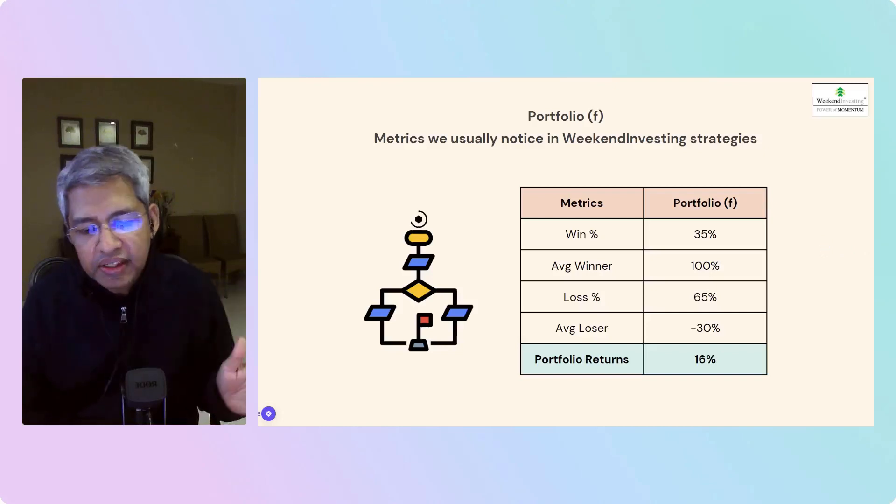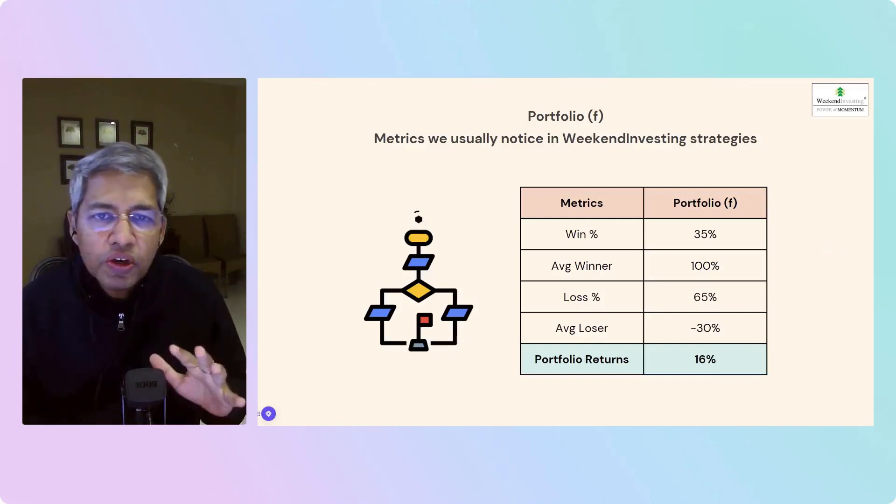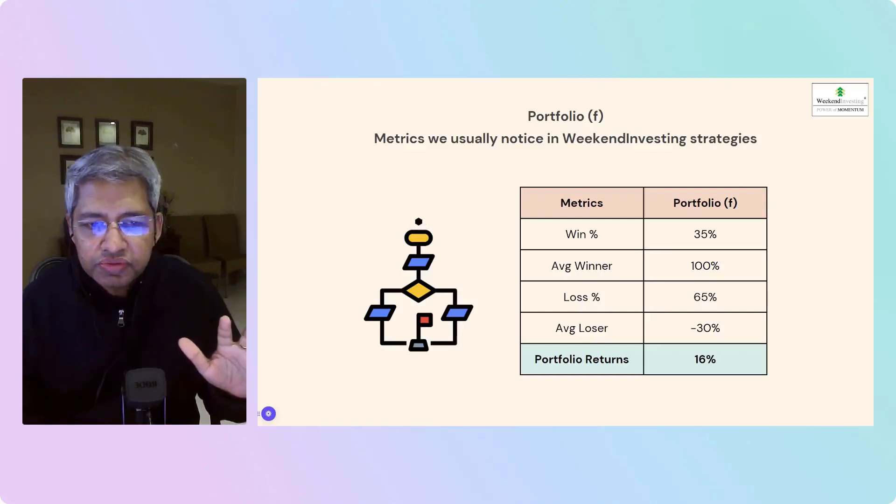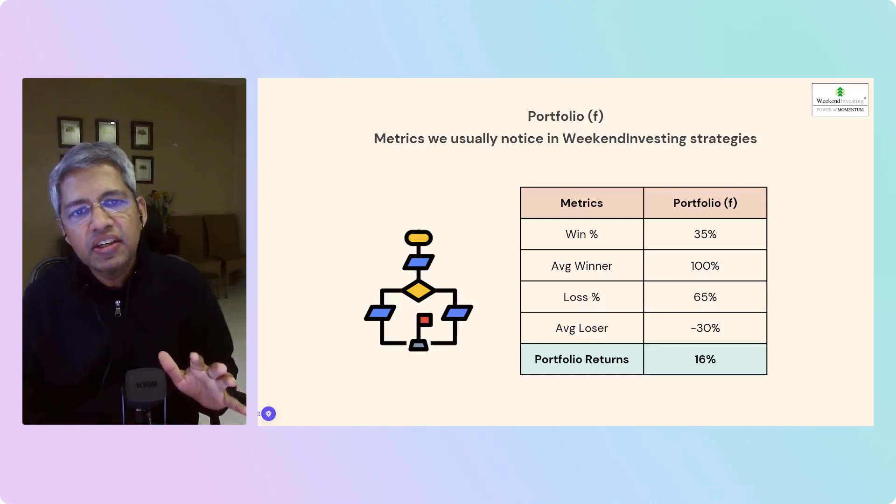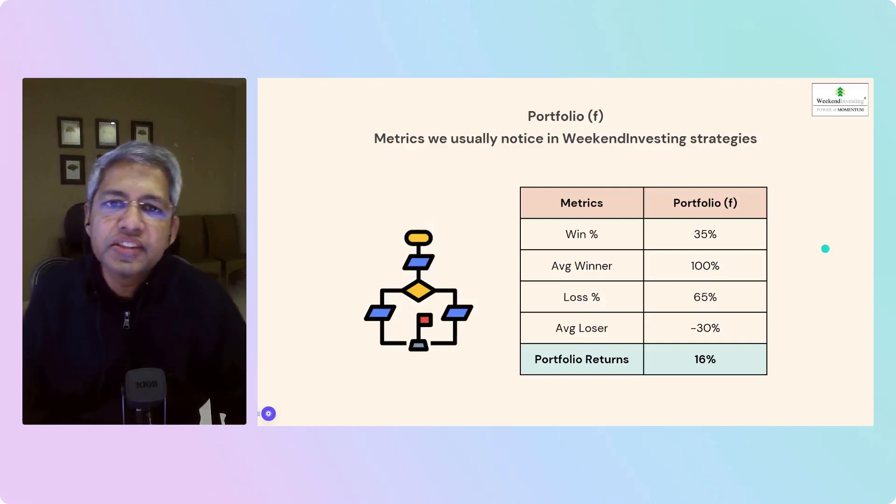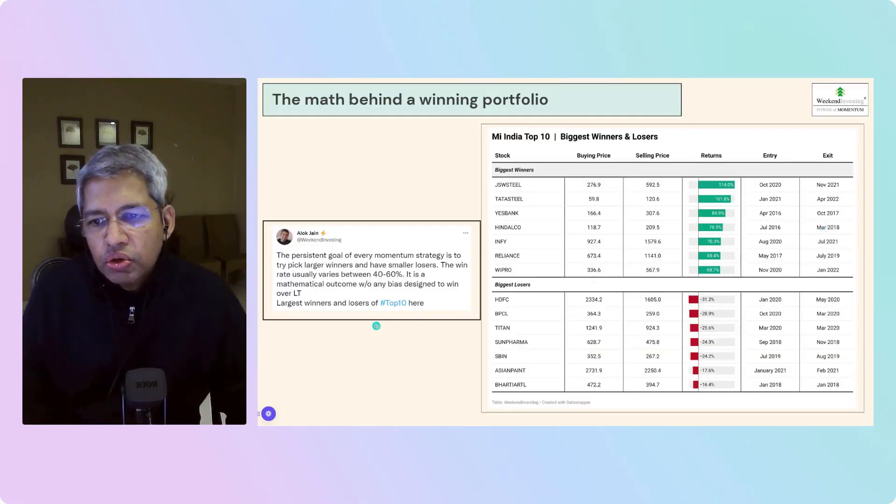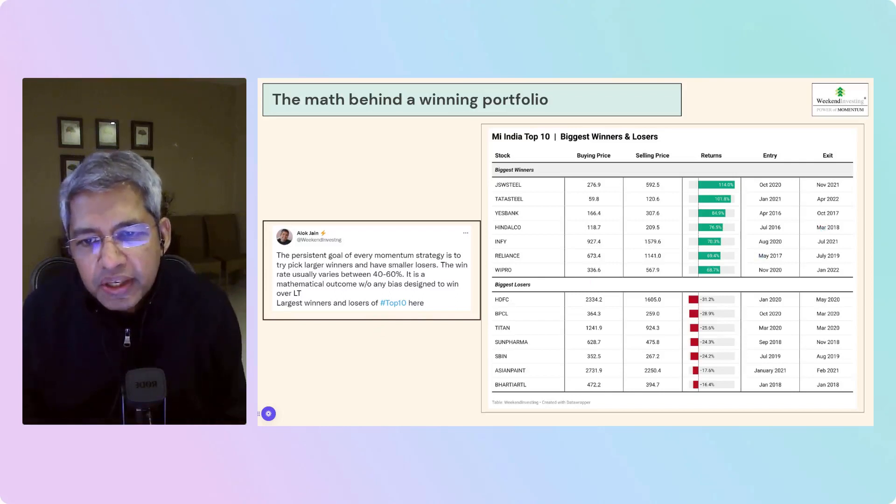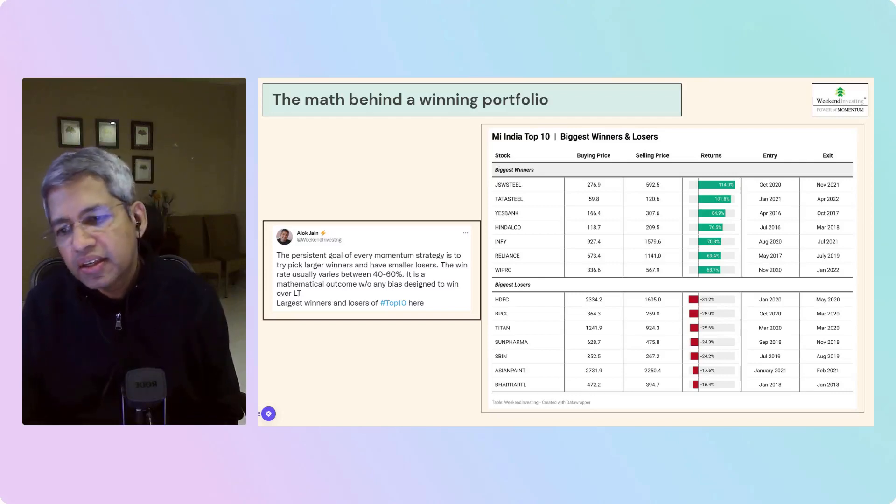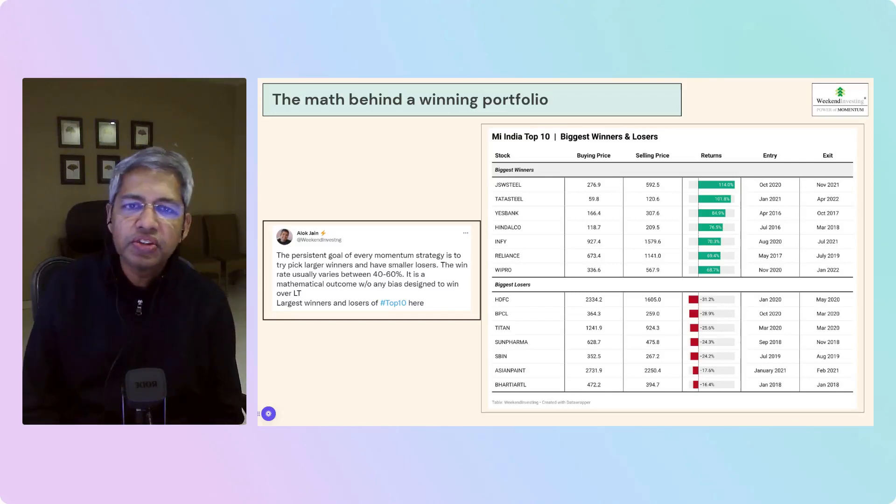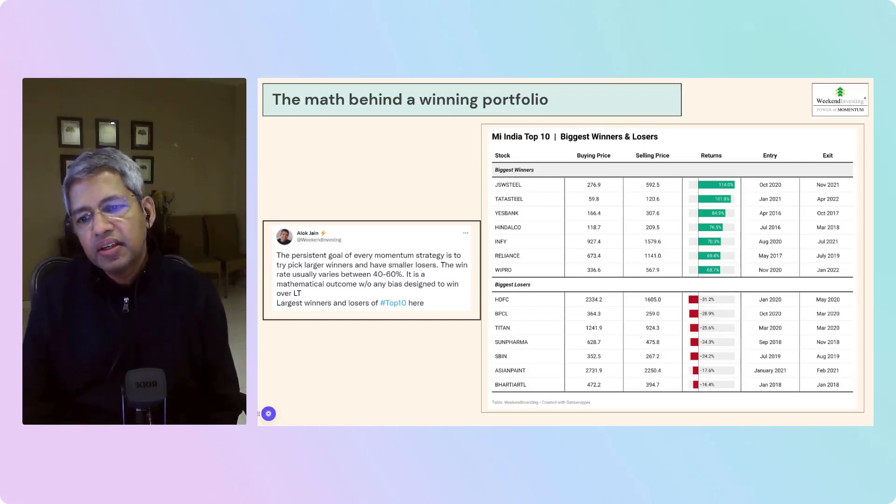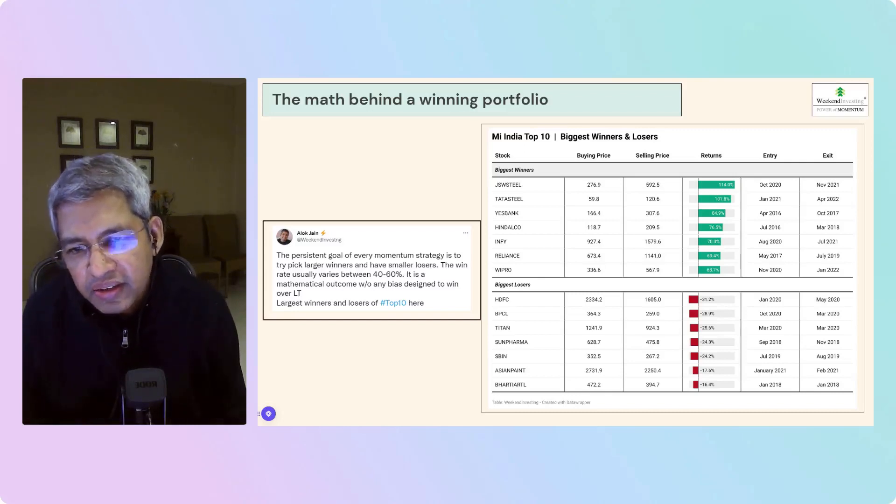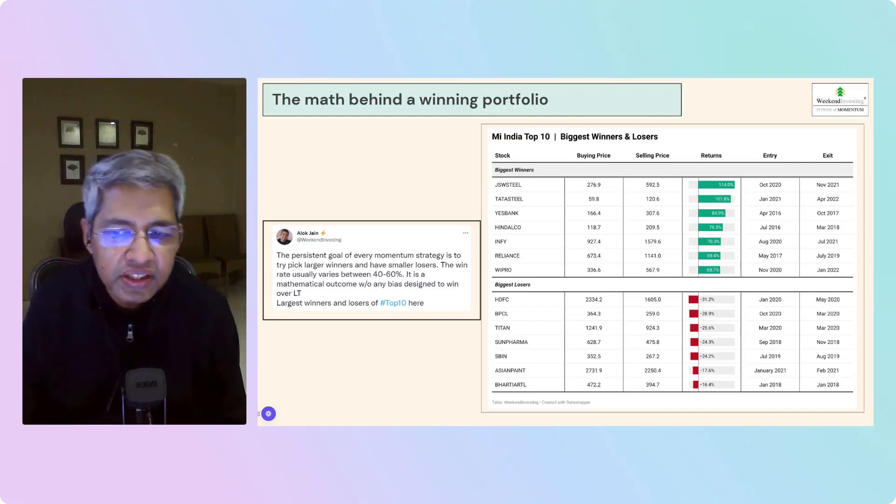This is very close to what you will see in most momentum strategies. So I hope this point is clear that you're only allowing the math to sort of take its course. You're designing the strategy in such a way so that the math works in your favor without you having to tweak anything every time you do a transaction. So the persistent goal in every momentum strategy, as I tweeted this morning also, the win rate is to vary between 40 and 60%, and the mathematical outcome, if you have the winning to losing ratio 1.5 to 1, 2 to 1, 3 to 1, that will determine the outcome of your portfolio.